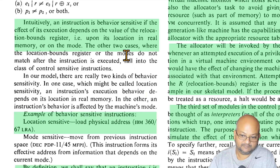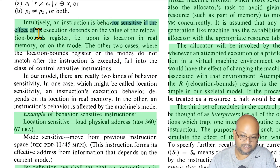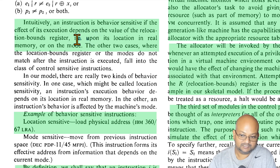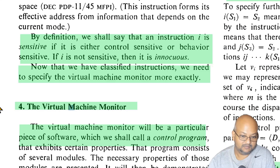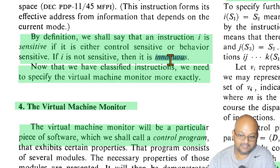Another type of sensitive instruction is a behavior sensitive instruction, meaning the execution of that instruction depends on the actual value of the relocation bounds register — in other words, on the actual, not the relative, location of some memory address. An example could be an instruction that loads an absolute physical address without going through memory redirection. If an instruction is not sensitive, it is called innocuous.